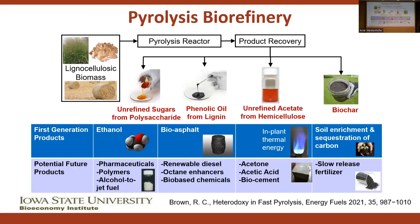I also mentioned that we produce multiple products to improve the economics of pyrolysis in the production of biochar for carbon removal. I refer to this as a pyrolysis biorefinery, reflecting the multiple products, which include unrefined sugars from the polysaccharides in the biomass, a phenolic oil from the lignin, an unrefined acetate from the hemicellulose component of the biomass, and of course biochar. We get all four of these products regardless of whether we're using woody or herbaceous feedstock, though they will change depending on the amount of carbohydrate, lignin, and ash in that feedstock.